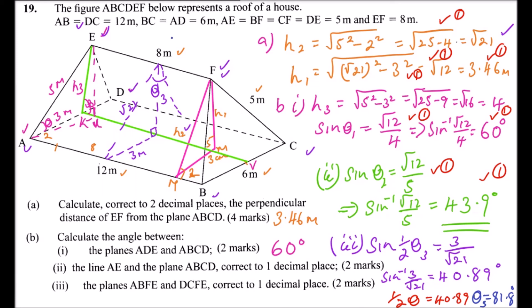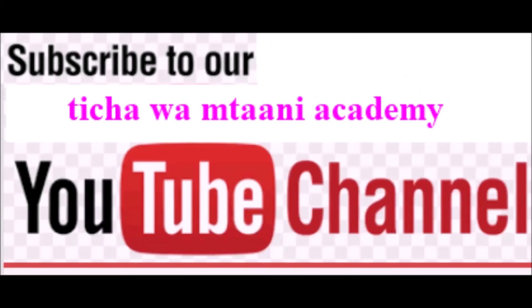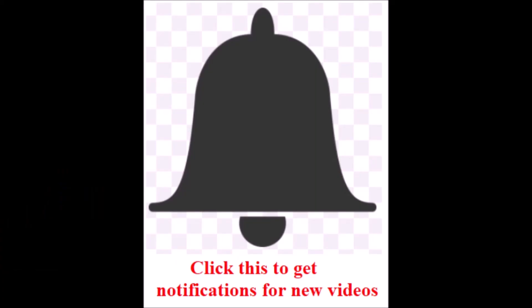That gives two marks — one for identifying the sine ratio and one for the answer — making 10 marks in total for the question. I hope you followed along. Subscribe to the channel and click the notification icon for new videos. You can also call or WhatsApp me for questions or to book an online class.